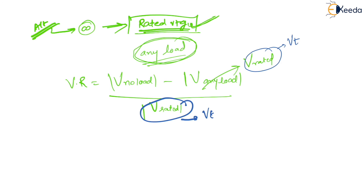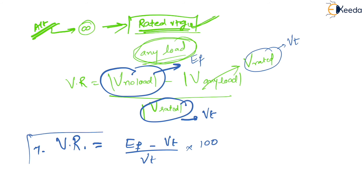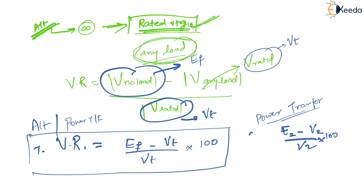This rated voltage is nothing but the terminal voltage VT. The no-load voltage is EF. So the voltage regulation for an alternator is: (EF − VT) / VT, multiplied by 100 for percentage. The same equation applies to power transformers, where EF is replaced by E2 and VT is replaced by V2.